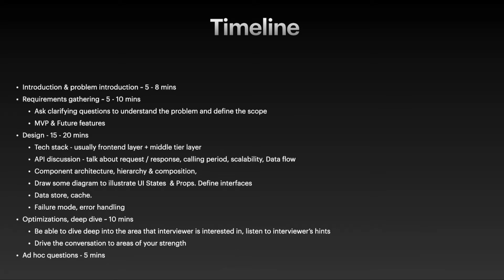Next, use this chance to list the APIs that you need and discuss what the request and response data would look like. Sometimes you may want to illustrate the data flow — for example, if you need to preload certain data for your initial routing, define how often the data is fetched. You can also talk about the scalability of the data model.